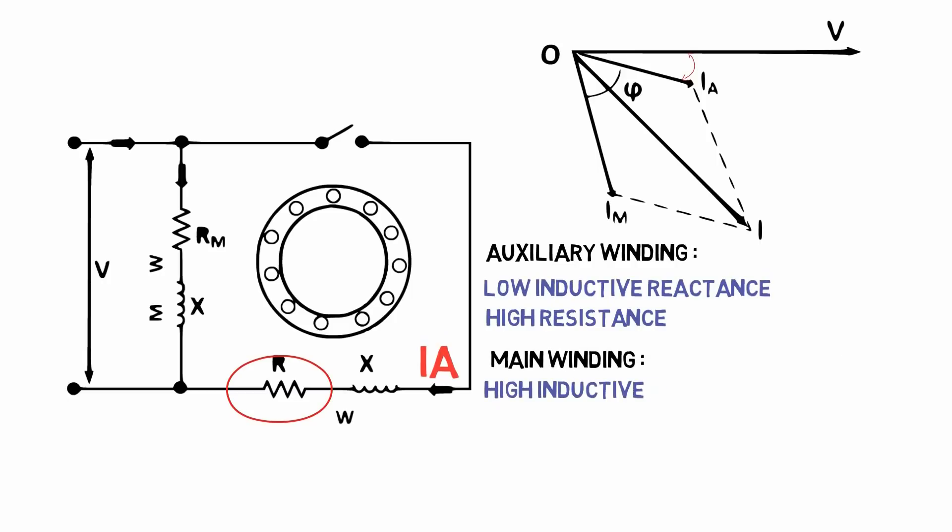And the main winding has high inductive reactance and very low resistance. Thus the main winding current I am lags behind the supply voltage V by nearly 90 degree.